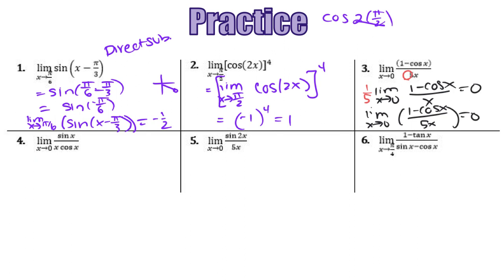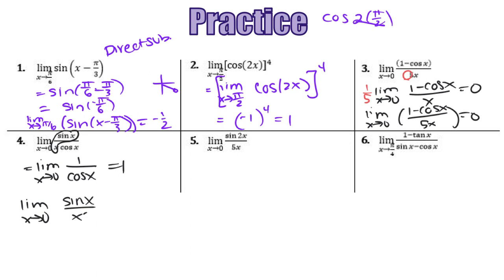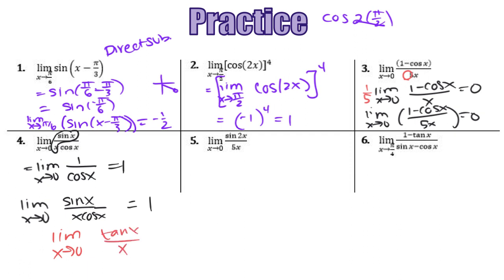For number 4, I'll identify the sine of x over x part — that limit equals 1 — leaving us with the limit as x approaches 0 of 1 over cosine of x, which is also 1. So the limit as x approaches 0 of sine of x over x cosine of x equals 1. Another approach: since sine over cosine is tangent, you could rewrite this as the limit as x approaches 0 of tangent of x over x, which we already proved equals 1.